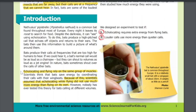Echolocating and flying rely on the same group of muscles. Scientists think that bats save energy by coordinating their calls with their wing beats. Because of this, scientists assume that echolocating while flying did not use much more energy than flying on its own. However, nobody has ever tested this theory for bats calling at different volumes.